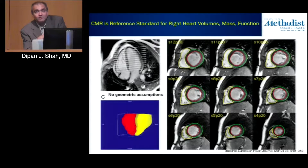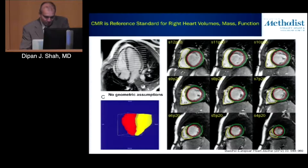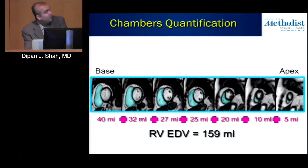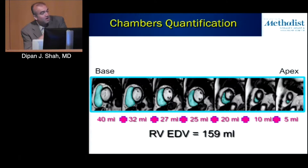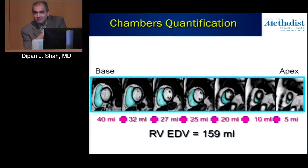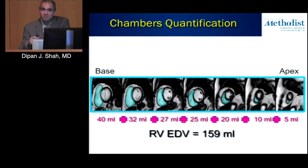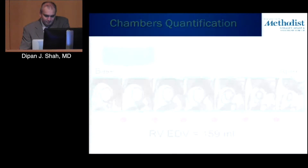Just as we would measure left ventricular myocardial contours, we can do the exact same thing for the right ventricle. By summating the volumes of each individual slice, we derive an RV end-diastolic volume, then do the same in systole for an RV end-systolic volume. By subtracting those two, we get a stroke volume and can calculate an ejection fraction.